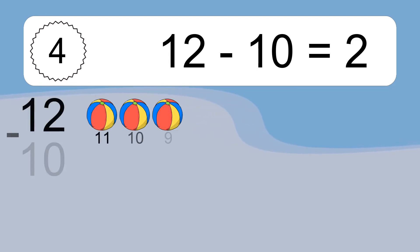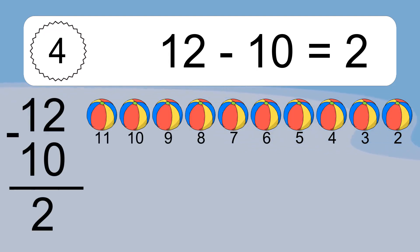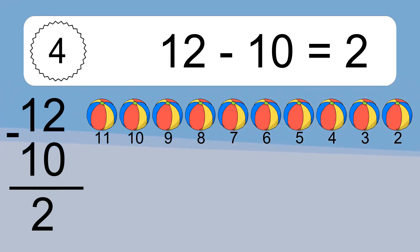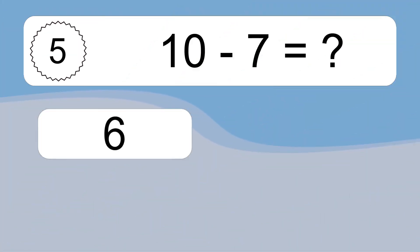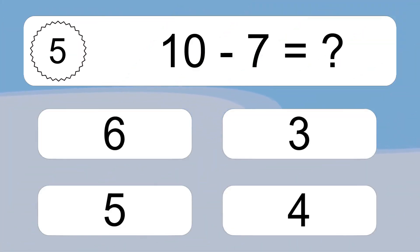12 minus 10 equals what? 12 minus 10 equals 2. Let's count it: 11, 10, 9, 8, 7, 6, 5, 4, 3, 2.